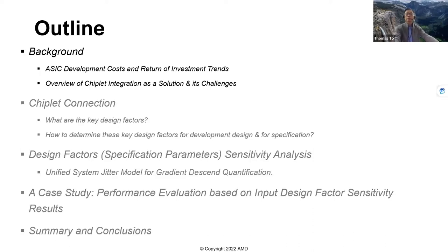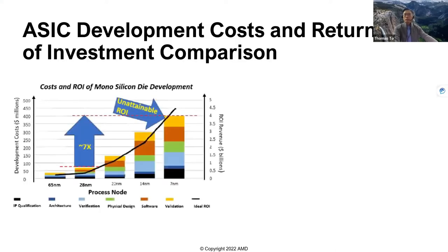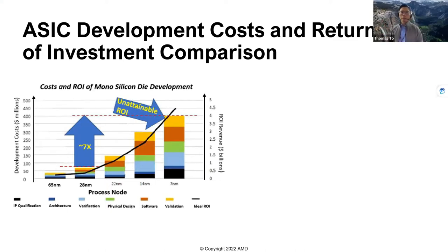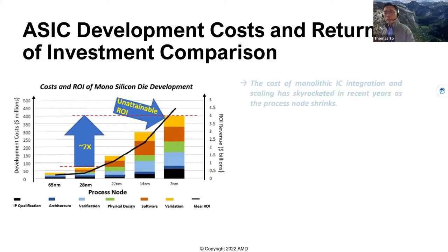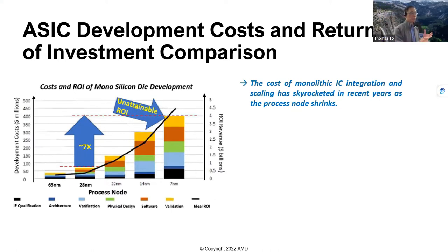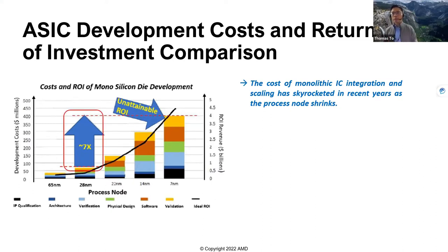Let's look at the background. This graph shows the ASIC development cost and the return on investment comparisons. On the left-hand side, you can see we plot out the amount in dollars to develop across different processing nodes. In each of these processing nodes, I highlighted subdivisions of the development activities, such as defining architectures, validating the design, software support, and physical design. Each subcategory is identified within this graph indicating the relative cost.